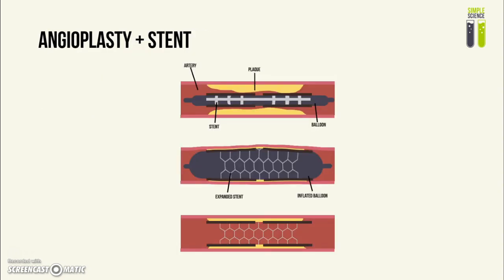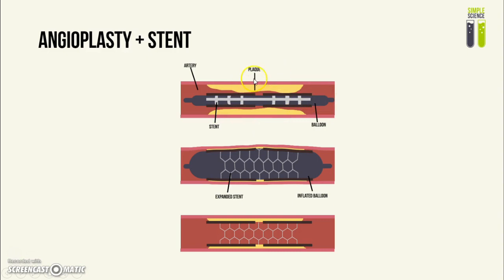You need to know about the ways in which this is treated. The first way would be to use an angioplasty and stent. This is basically when a deflated balloon with a stent around it, which is basically just a mesh of metal, is inserted into the body into the vessels until it reaches the region in the coronary artery that has the plaque.